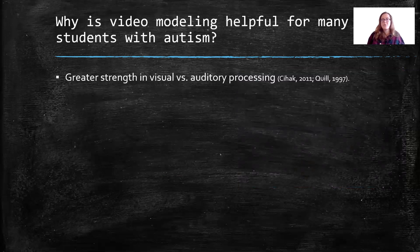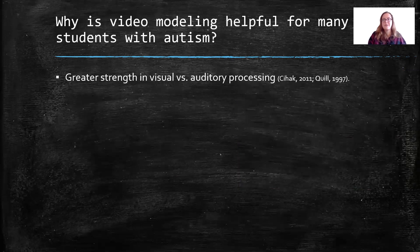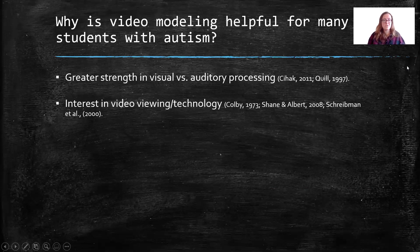We know that many students with autism have a greater strength in visual processing versus auditory processing, so visuals are often the learning area they're strongest in. That's what makes this strategy so great — we're giving a visual model. There's also research indicating that students with autism may have a particular interest in video viewing and technology, and studies have specifically shown they really like to engage with video content.